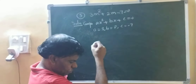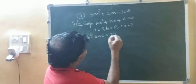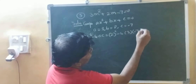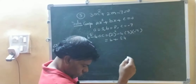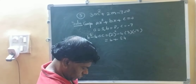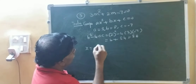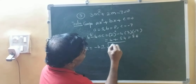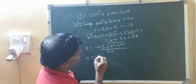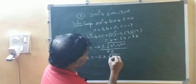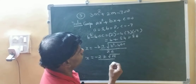So we will first find out b squared minus 4ac: 2 squared minus 4 into 3 into minus 7 equals 4 plus 84, so 88. Now the formula — x equals minus b plus or minus root of b squared minus 4ac upon 2a. Substitution should be very careful: minus 2 plus or minus root of 88 upon 6.